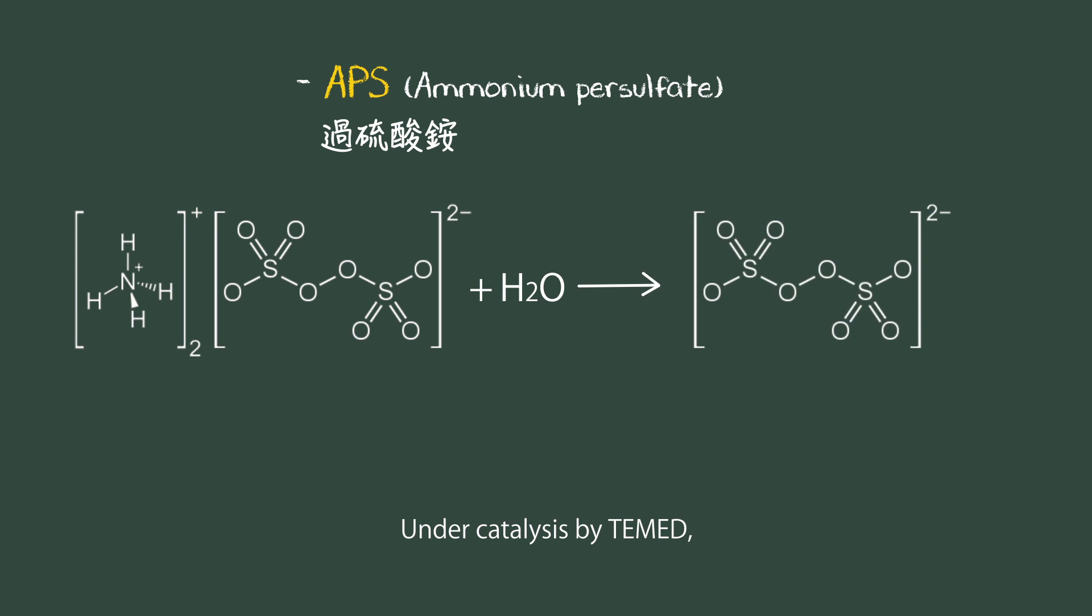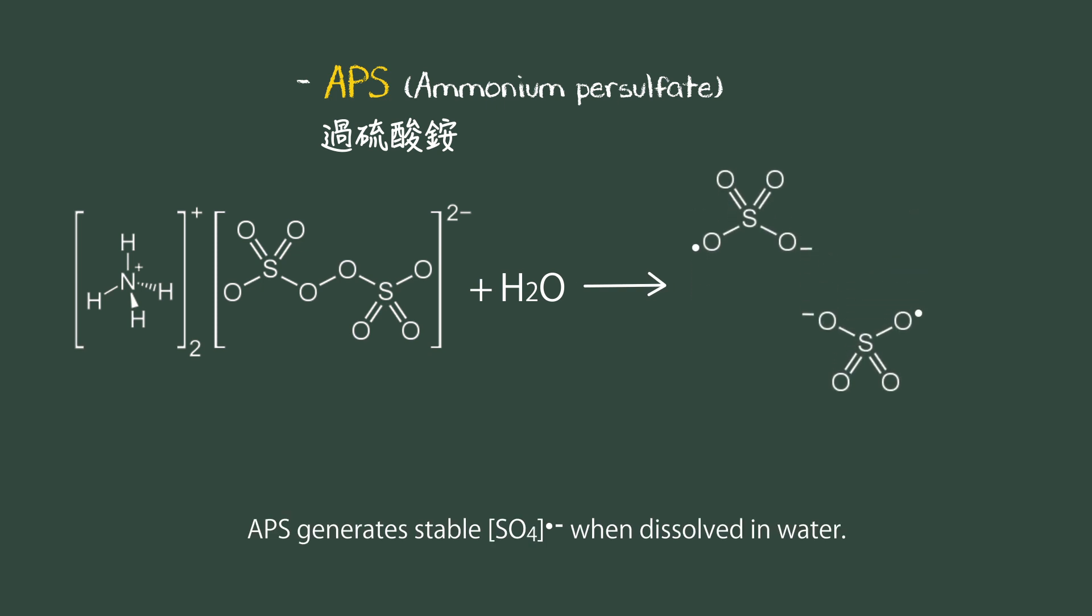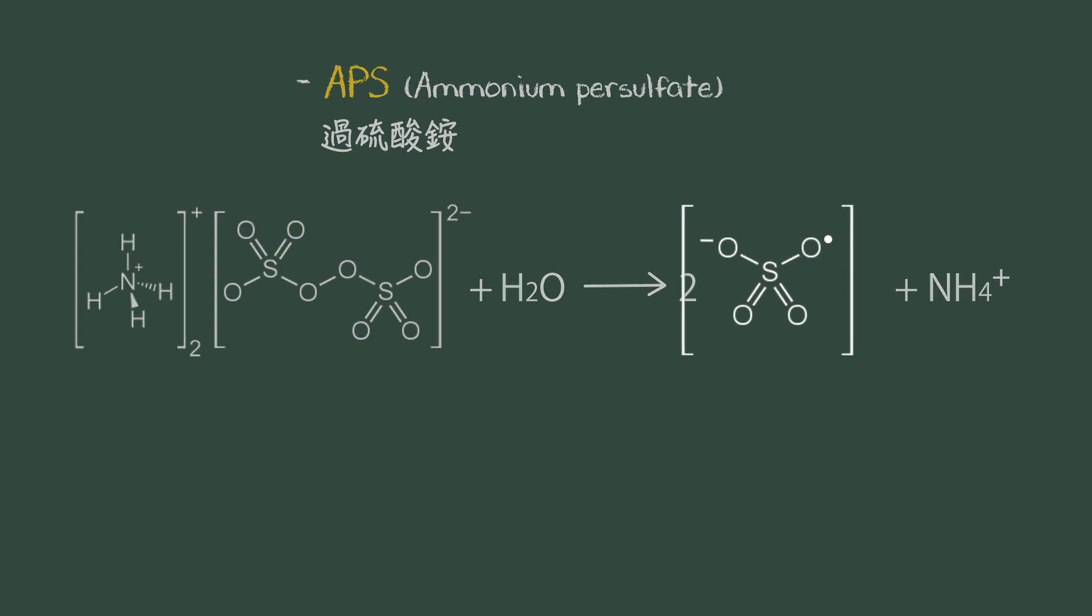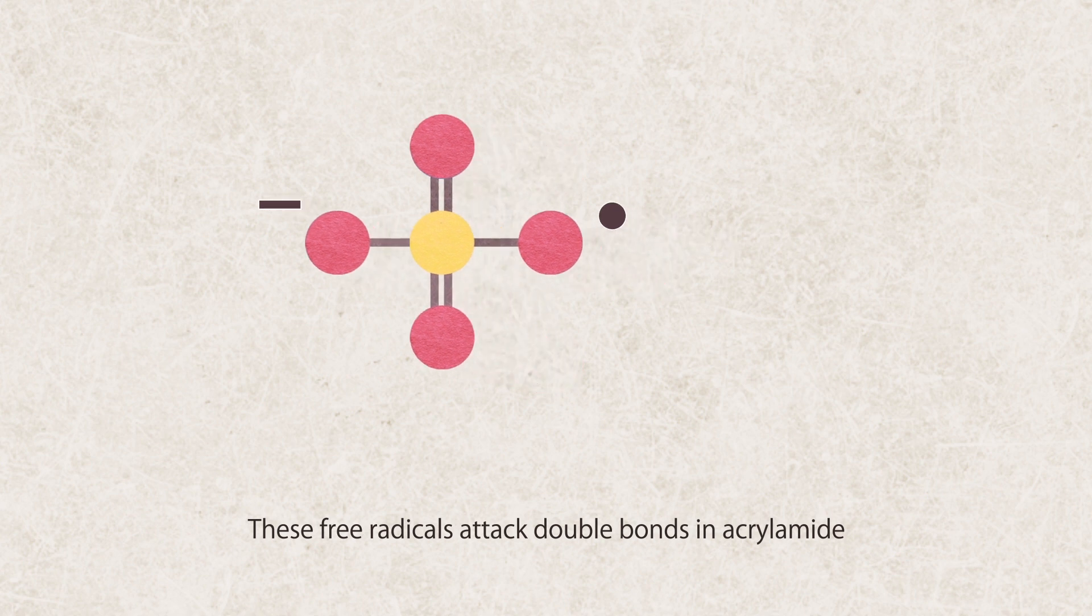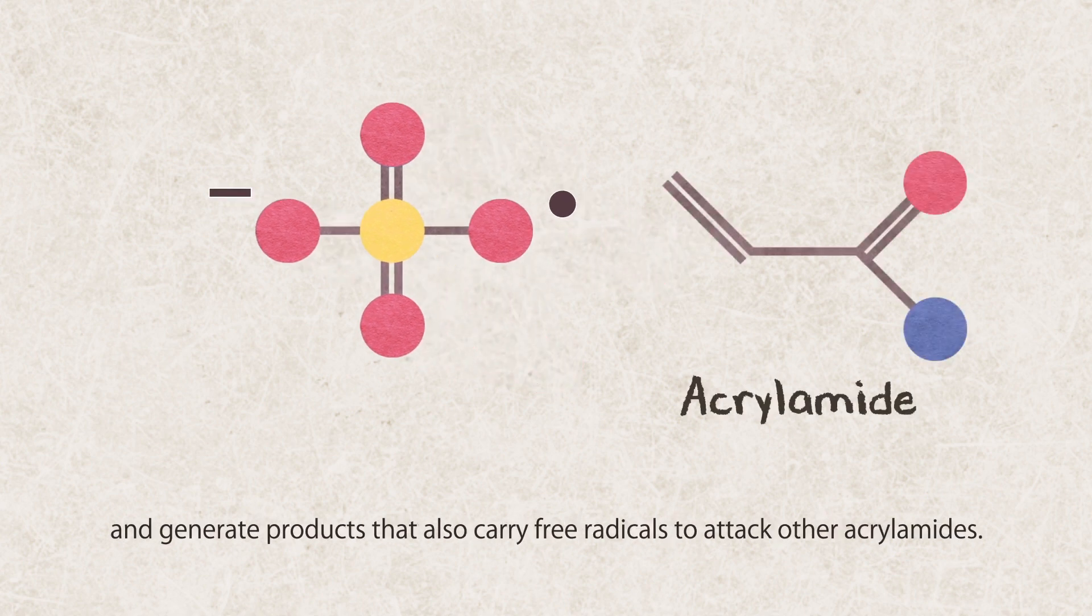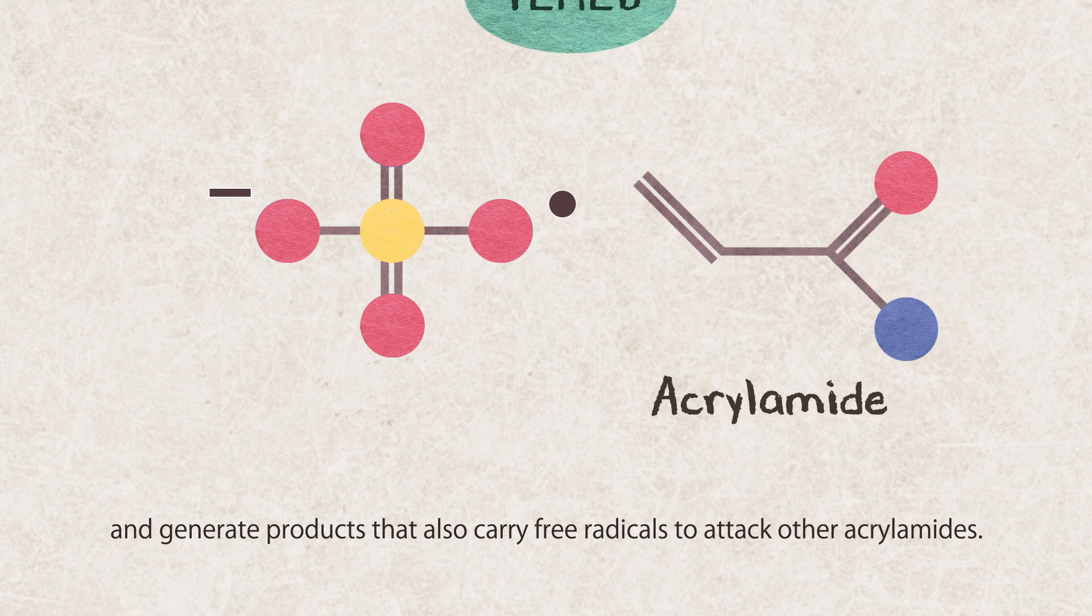Under catalysis by TEMED, APS generates stable SO4 free radicals when dissolved in water. These free radicals attack double bonds in acrylamide and generate products that also carry free radicals to attack other acrylamides.